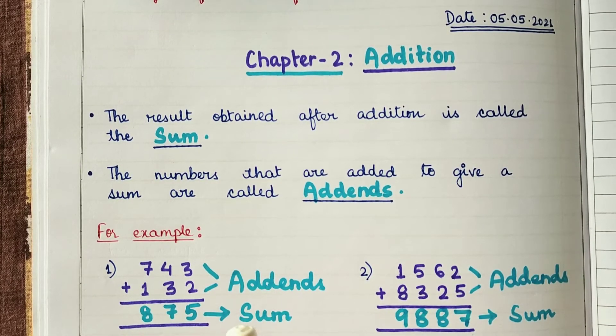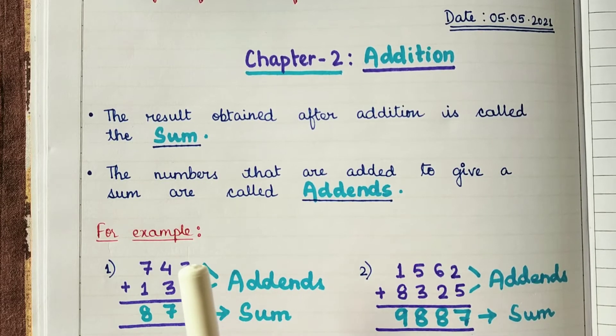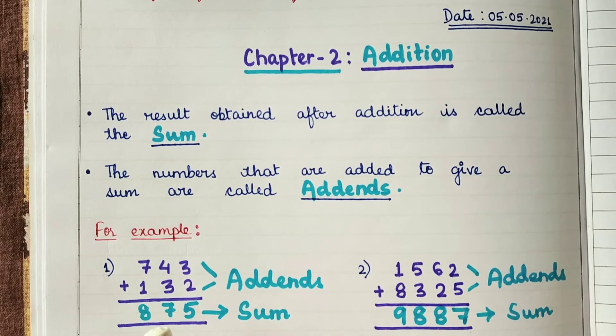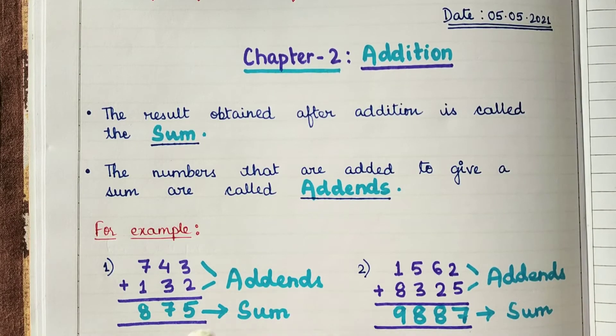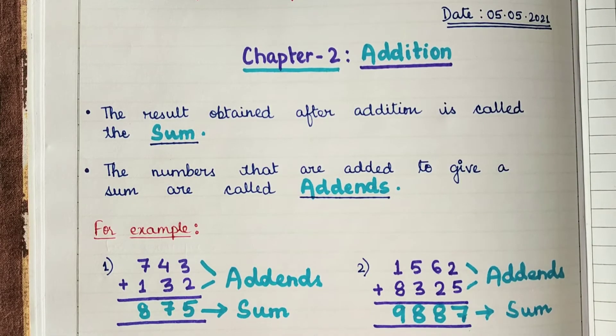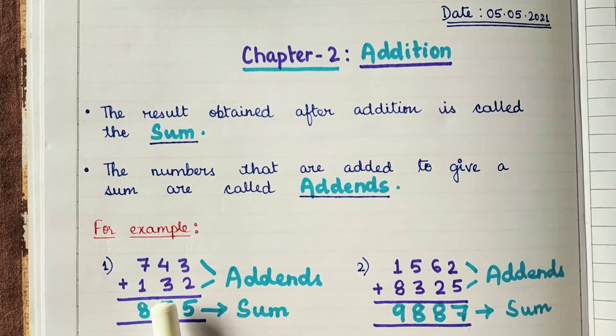Let's understand these two terms with the help of these two examples. Children, in both the examples, the addition is already done and we can see the addends and sum as they are labeled. So, let's look at the first example.